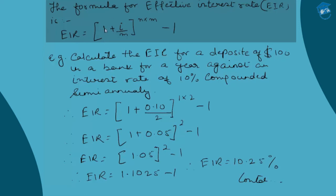The effective interest rate is the actual rate obtained after the nominal interest rate undergoes a change in its paying pattern — instead of annual payment, it is paid in a fragmented way within the year. Dividing i by M means the nominal interest rate is divided by M, the number of times compounding is done in a year. For example, if 10% is compounded semi-annually, M = 2, so i/M = 0.10/2 = 0.05, paid twice in a year.